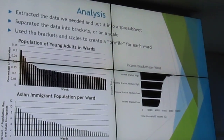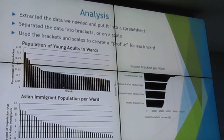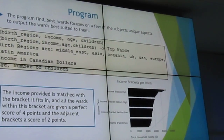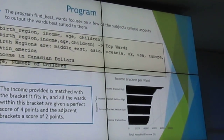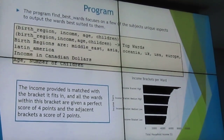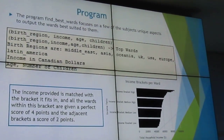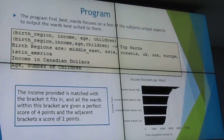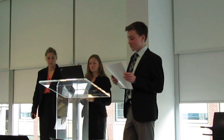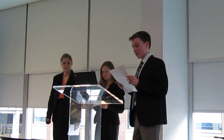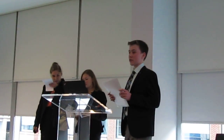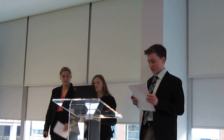The program we created, Find This Ward, takes into account four variables: birth region, income, age, and number of children. Initially, each ward is assigned a variable, and these variables are then sent through a series of tests in which they receive points depending on the inputted data, on either a scale or bracketed system.